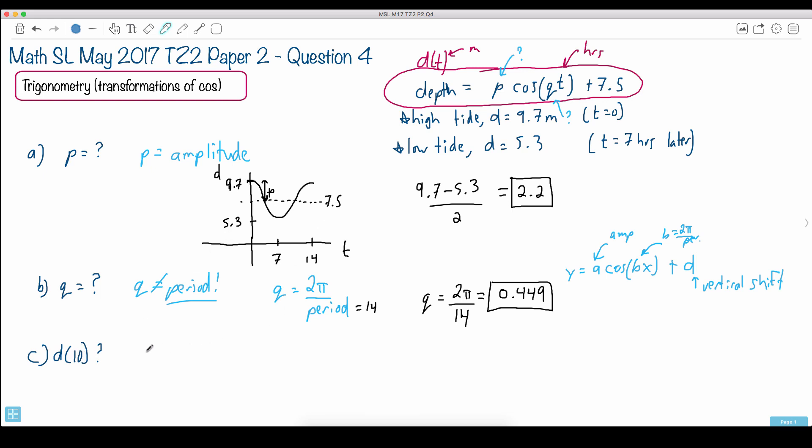So I think it helps to rewrite our equation, right? Maybe we'll do that here. I'll start off by saying d of t. Well, that equals p, which is 2.2, times cosine of q, which is 0.449.